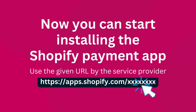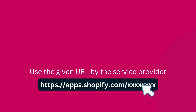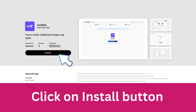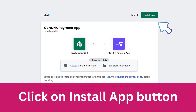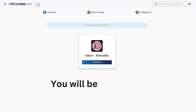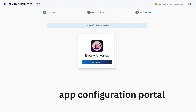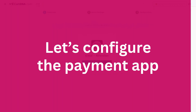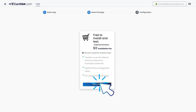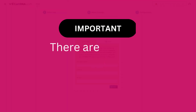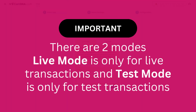You have successfully configured the webhook. Now you can start installing the Shopify payment app. Click on the Install button, then click on the Install App button. You will be redirected to the app configuration portal. Click on the Continue button to go to the next step.